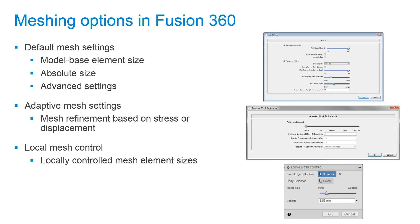In addition to the default settings, we also have adaptive mesh settings. These mesh refinement settings can be based on stress or displacement. In addition to that, we also have local mesh control. This will allow us to select certain faces or edges and locally control the mesh element sizes.